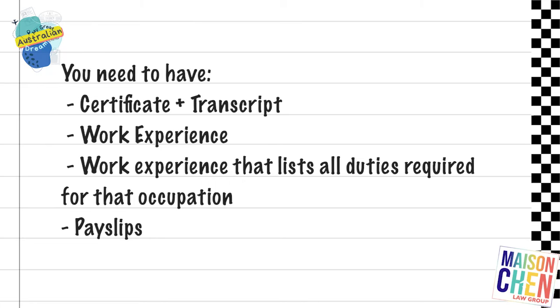If any of those pathways apply to you, you need to be able to provide the evidence to back it up. A lot of it requires a qualification, so you need to have the certificate plus the transcript, because ACS looks closely at that transcript to see if you have the right qualification subjects. You also need to have the work experience to back it up. ACS are pretty difficult when it comes to work experience assessment — you must have relevant work experience and a work reference that lists all the required work duties for that occupation.